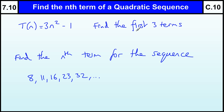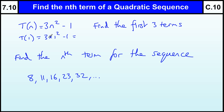First of all, not actually finding the nth term but using an nth term formula. The term n equals 3n squared minus 1 — find the first three terms. All you've got to do is: term 1 is where n equals 1. So we have 3 times 1 squared minus 1. 1 squared is 1, times 3 is 3, take away 1 is 2. So the first term is 2.